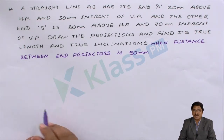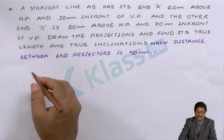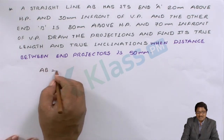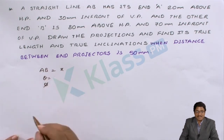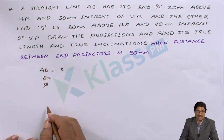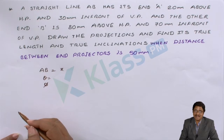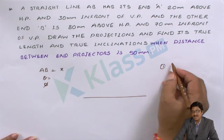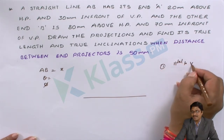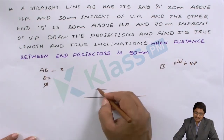You have to keep in mind the fundamental concept. In the previous problem, whenever a line is given with some length x, inclination theta with HP, inclination phi with VP, and an endpoint is also given — whenever the line is inclined with both the planes, we cannot draw directly. That is why we drew the XY reference line first, then took Assumption 1: parallel to VP. With the line above HP at inclination theta, I drew the line and the respective front view.